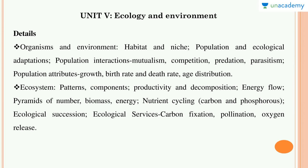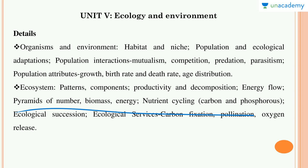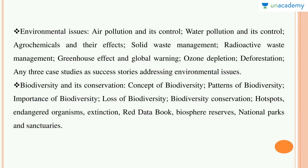Unit 5 — Ecology and Environment — is the super most important unit. Topics include organisms and environment, habitat, niche, population, ecological adaptations, competition, predation, parasitism, population attributes like growth, birth rate, death rate, and age distribution. Then ecosystems: patterns, components, productivity, decomposition, energy flow, pyramids (very important), nutrient cycling, ecological succession, carbon fixation, pollination, and oxygen release.